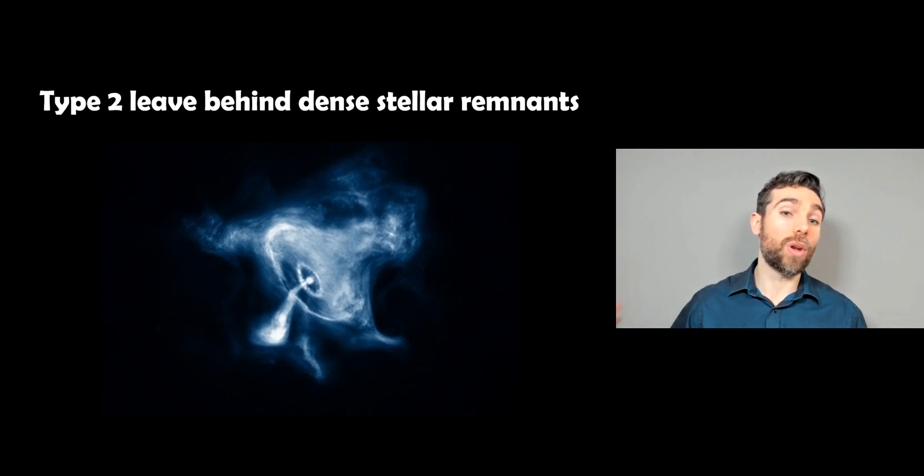Now the type 2 will leave behind a dense stellar remnant. So here you've got a pulsar and you can see the jet coming out on the left-hand side, and you could also get a neutron star or black hole, it all depends on how massive the star was when it came to the end of its life. More massive stars will leave a black hole, ones that are less massive than that will have a neutron star or a pulsar.